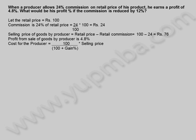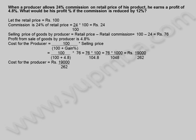Profit from sale of goods by producer is 4.8%. Cost for the producer = 100/(100 + gain%) × selling price = 100/104.8 × 76 = 76 × 1000/1048 = 19000/262 rupees.